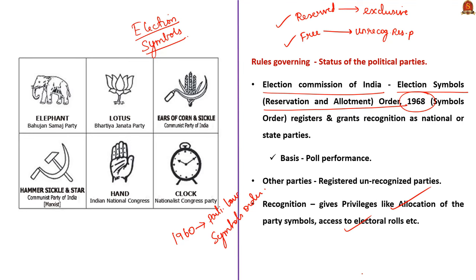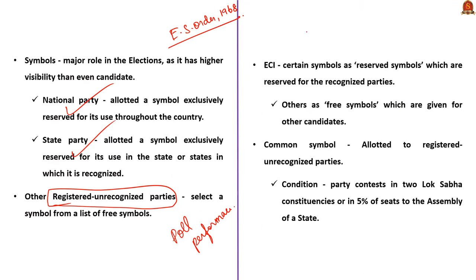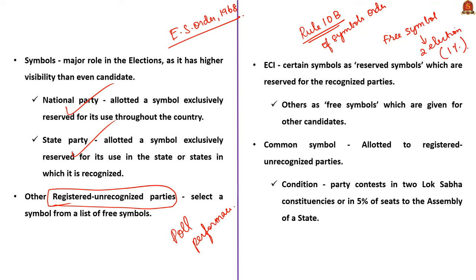Now let us see the current issue regarding Election Symbol Allocation. Rule 10b of Symbols Order provides that the concession of common free symbol will be available to registered unrecognized parties for two general elections. After two general elections, it will be eligible for a common symbol only if it has secured at least 1% of votes polled in the state. Such unrecognized parties should apply for a symbol every time in the prescribed format. The application can be made any time during the period of 6 months prior to Lok Sabha elections, and symbols are allotted on a first come first served basis.